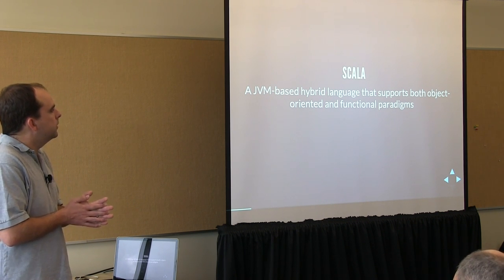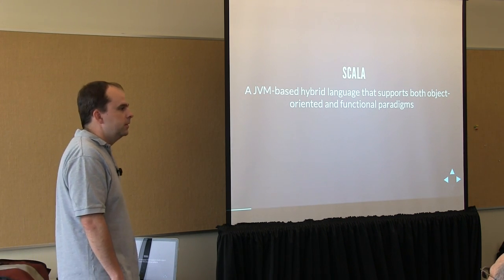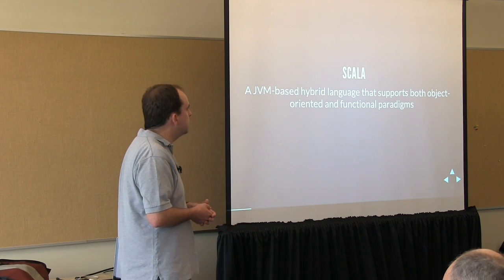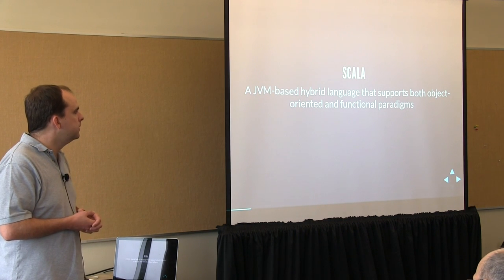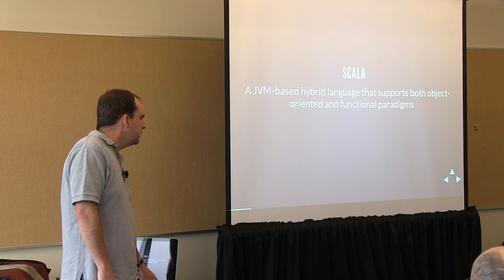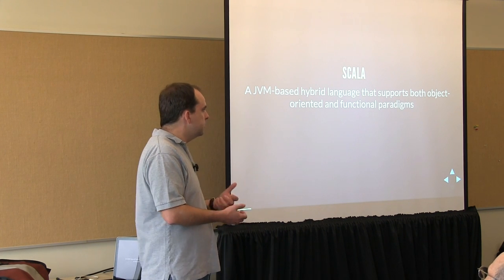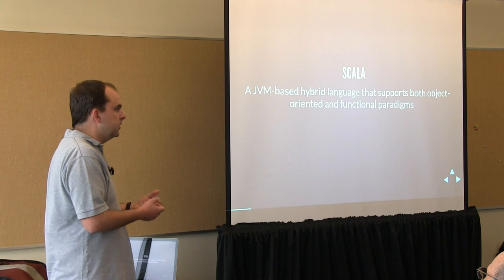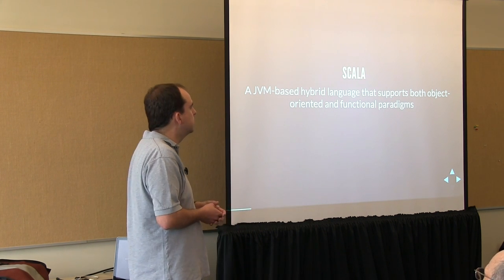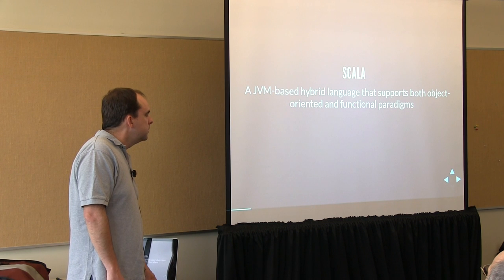Scala is a JVM-based language that supports both the object-oriented and functional paradigms — it's a hybrid language. Some languages are purely functional, some are purely object-oriented; Scala combines both of those styles. It's a nice pragmatic combination. If you're coming from a background as a Java developer, it makes it easier to get into the syntax because much of it looks like what you would have done in Java — you use the dot operator a fair amount — but then you get to start adopting the functional style as well.